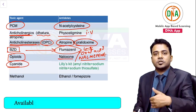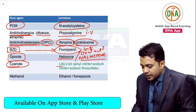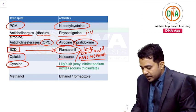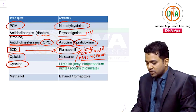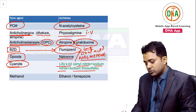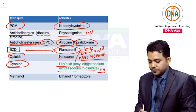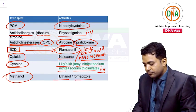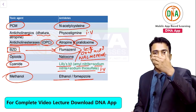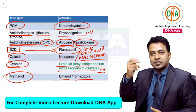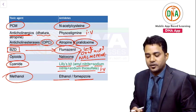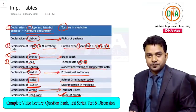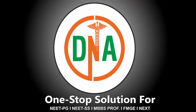For cyanide poisoning, the antidote is Lilly's Cyanide Antidote Kit, consisting of three things: amyl nitrite pearls for inhalation, sodium nitrite, and sodium thiosulfate given IV. For methanol poisoning, the antidote of choice is ethanol, or we give fomepizole. This finishes the entire table — revise these tables again and again, as many questions come from these five or six tables. Thank you.